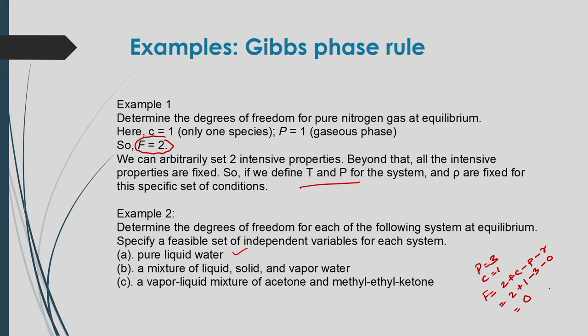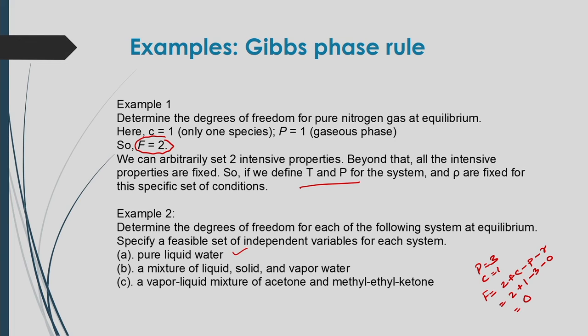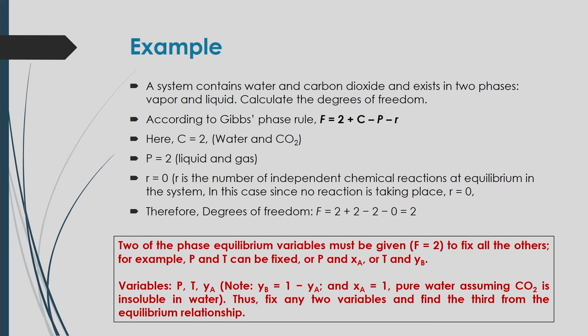Another example: a system contains water and carbon dioxide existing in two phases — vapor and liquid. Here c = 2, p = 2, r = 0, so f = 2. Two phase equilibrium variables must be specified to fix all others — for example, pressure and temperature, or pressure and mole fraction xa, or temperature and mole fraction yb.